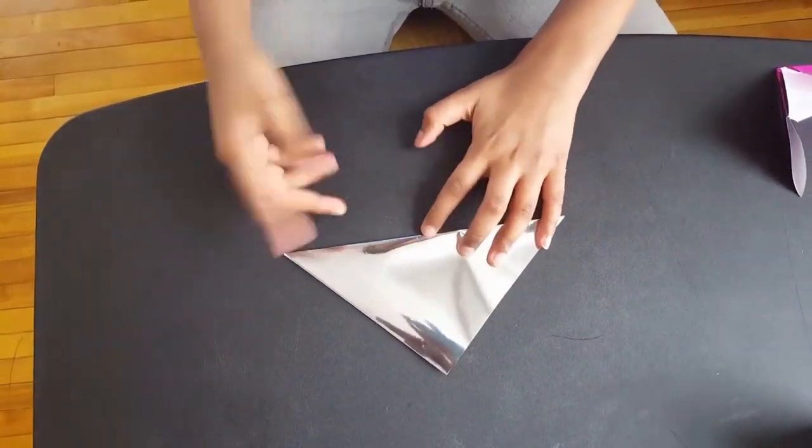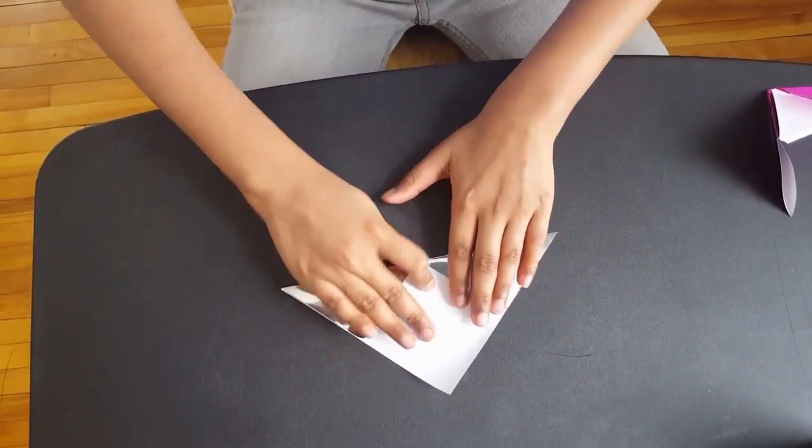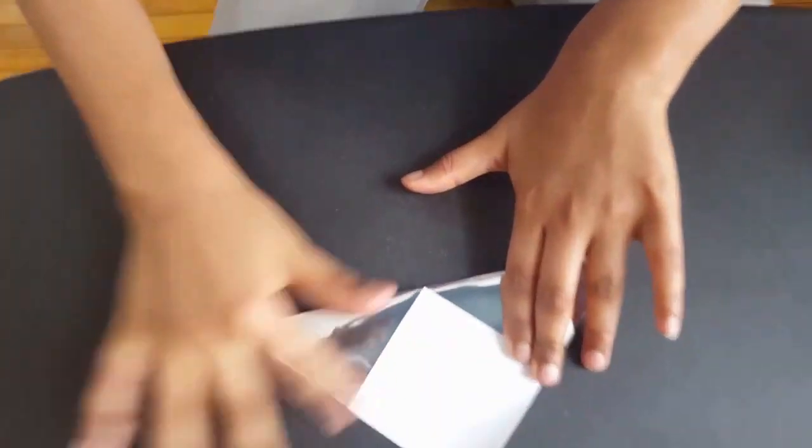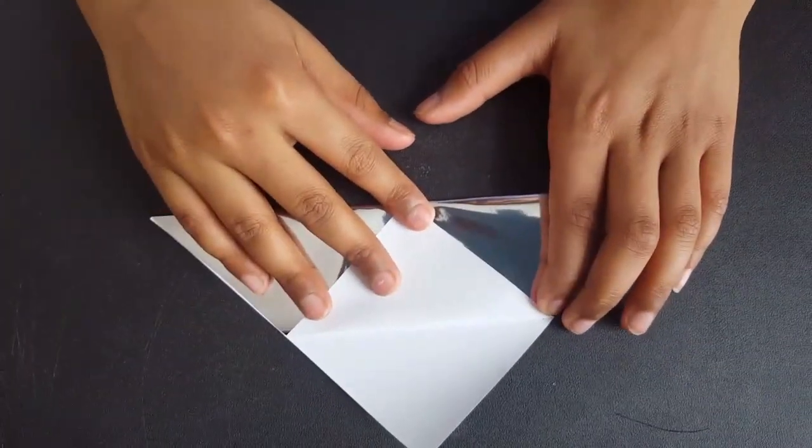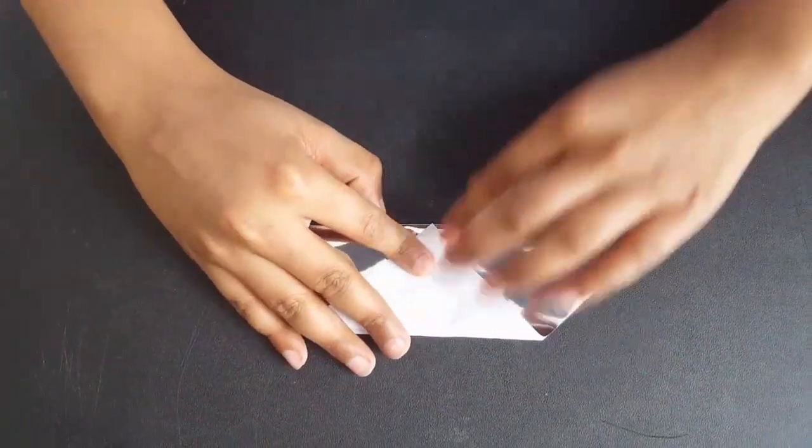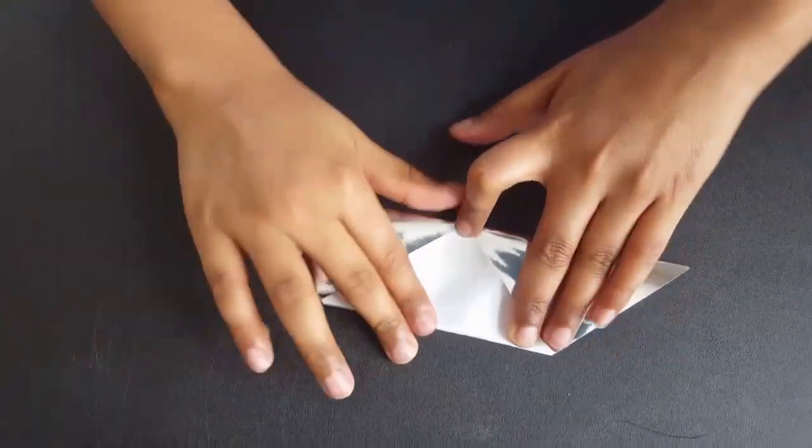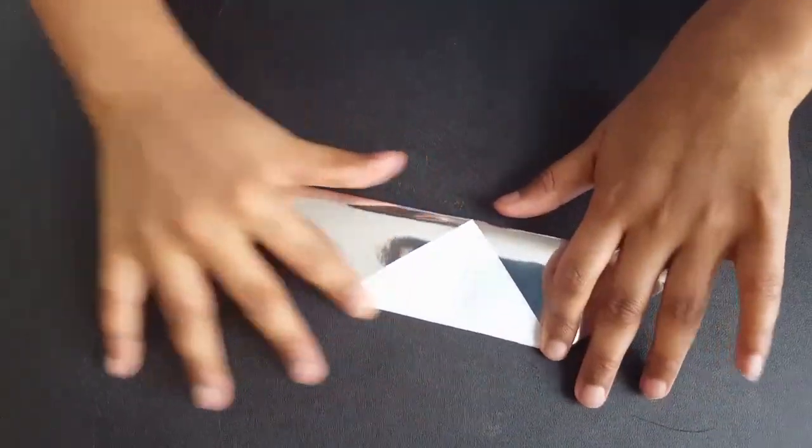Then you have this triangle but then you have to fold this triangle down here like this and you do the same to the other side. It should only be touching the bottom like this. Check both sides if you're touching the bottom.